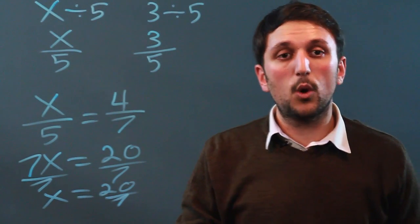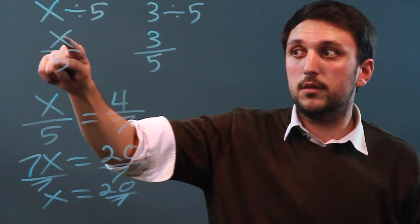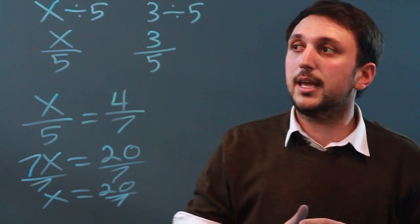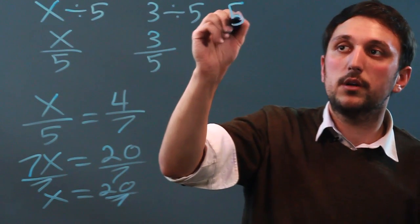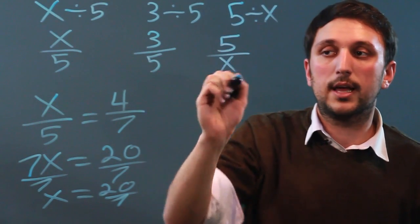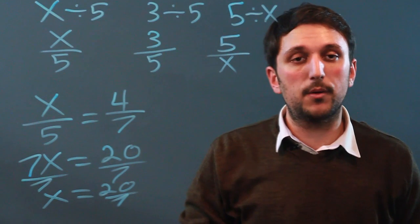So just to repeat, when you have a variable and you want to divide, the variable becomes the numerator and the other number becomes the denominator. If you were to say 5 divided by x, you would have 5 over x. So you've just learned how to divide a variable by a number in algebra.